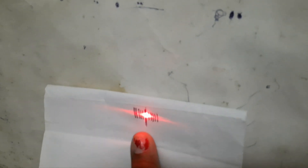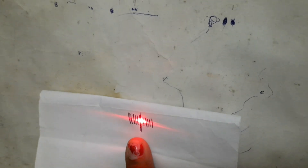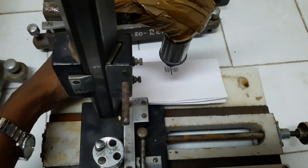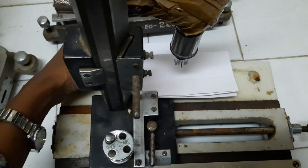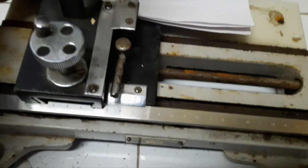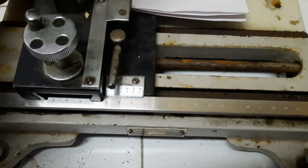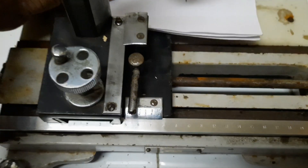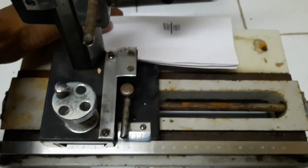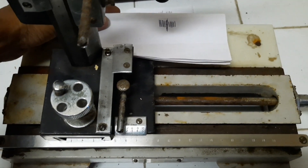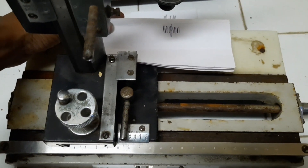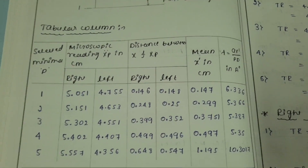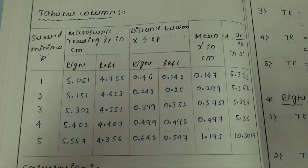Hold the A4 sheet and draw the lines of the diffraction pattern. Using a traveling microscope, you can measure the distances from the central maxima — right and left. Note the main scale reading and the vernier scale reading. You should take 5 readings for right and left from the central maxima.